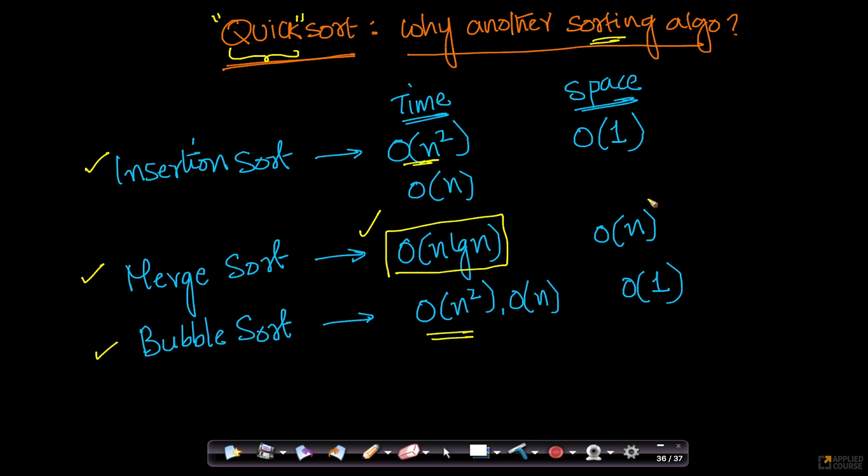But the biggest problem with merge sort is this additional space that we need to use to store the temporary arrays. Because when we have the large array, we break it into two small arrays. We have to store them in the left array and the right array.